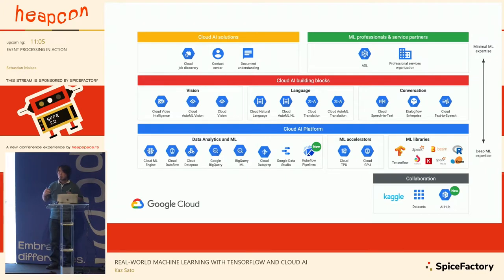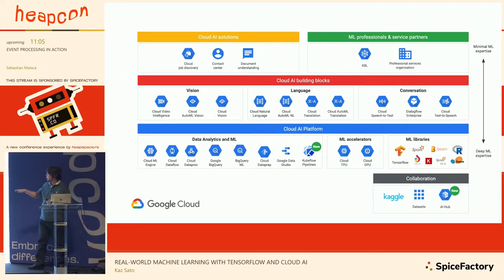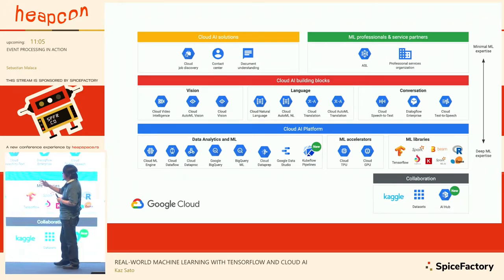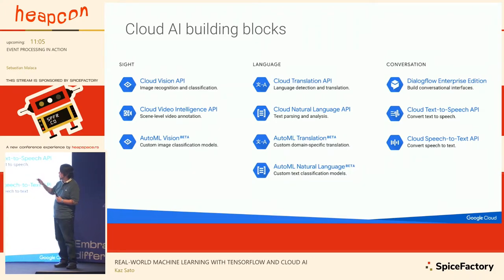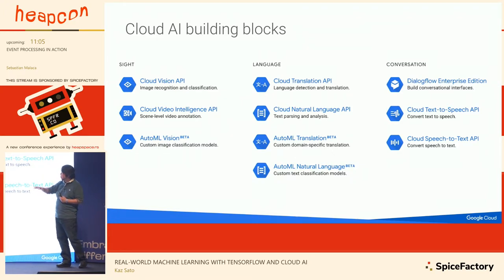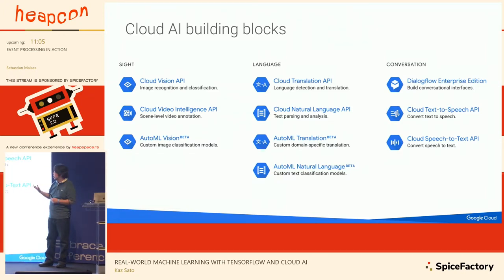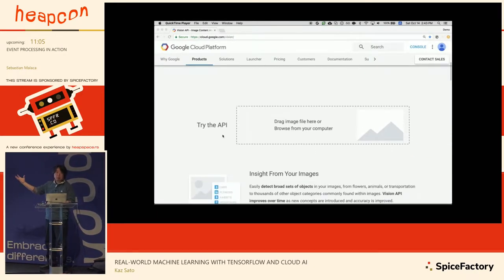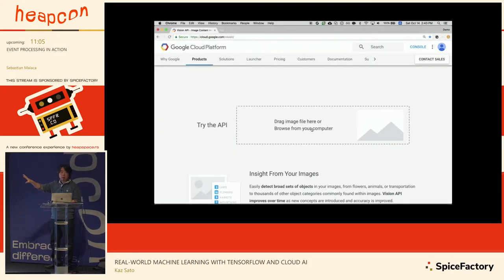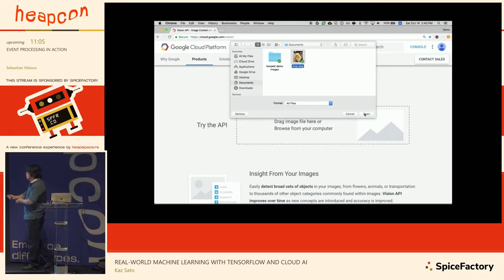We are now exposing the power of machine learning to developers through Google Cloud Platform. We've provided many different APIs, services, and solutions powered by Google's AI technologies. Google's AI building blocks are pre-made APIs for visual recognition, voice recognition, translation, and more. For using those building blocks, you don't have to learn anything about machine learning at all. If your business requirements can be solved with those APIs, just go and use them. For example, you can go to the Cloud Vision API page and upload an image of a sheepdog to get labels like dog or mammal.